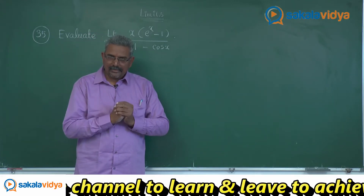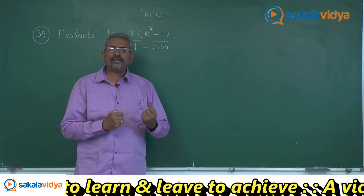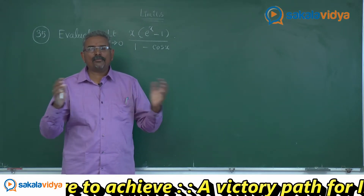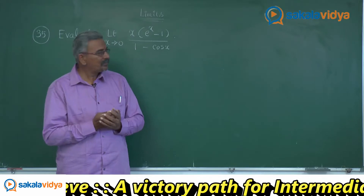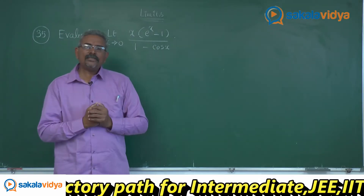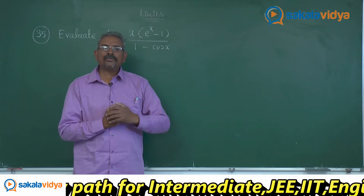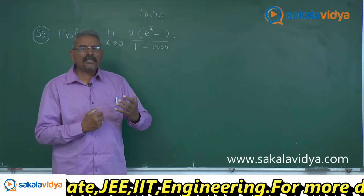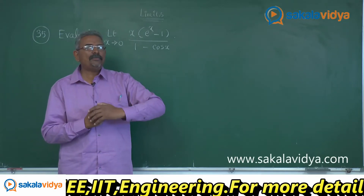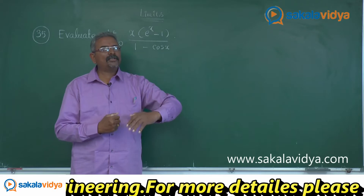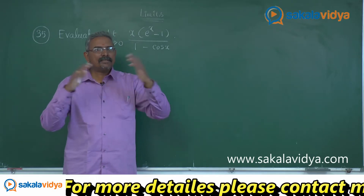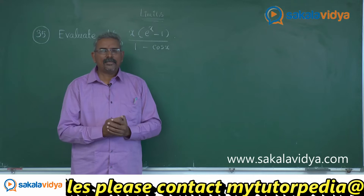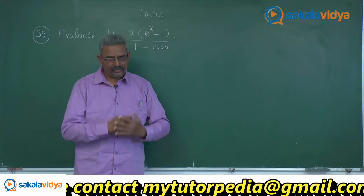That is why whenever these kinds of problems are given, these are called complex types or mixed types of problems. Here, first we need to divide both numerator and denominator by x square, so that we can apply the limit to the numerator as well as the denominator. Using previous experience, this problem can be solved. Let us proceed for the solution now.